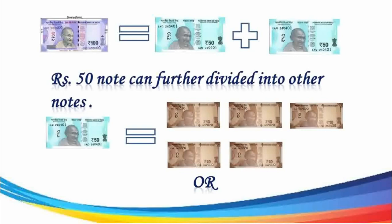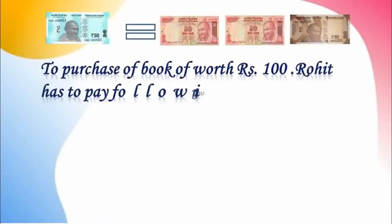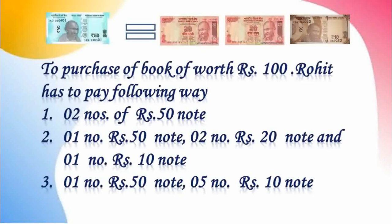Rupees 100 can be converted like this: Rupees 50 plus Rupees 50 equals Rupees 100. Now Rupees 50 can also be divided as Rupees 10 added 5 times, that is 10 into 5 equals Rupees 50. Also, Rupees 50 can be divided as Rupees 20 twice plus Rupees 10, which equals Rupees 50.